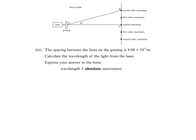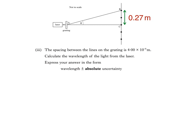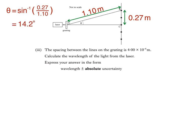Part B3 says: the spacing between the lines on the grating is 4 × 10⁻⁶ metres. Calculate the wavelength of the light from the laser, expressing your answer in the form wavelength plus or minus absolute uncertainty. First, we calculate angle theta between the central maximum and the second order maximum using trigonometry, since we know BC and AB. BC is 270 millimetres, which is 0.27 metres, and AB is 1.10 metres. Angle theta is sin⁻¹(0.27 ÷ 1.10), which is 14.2 degrees.